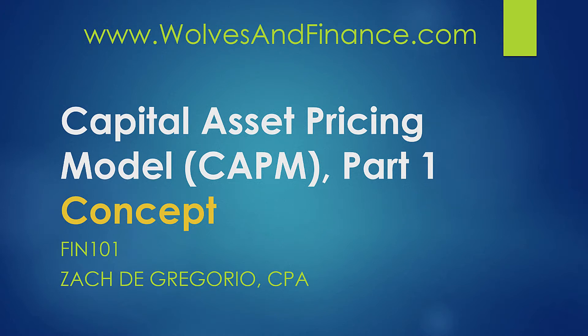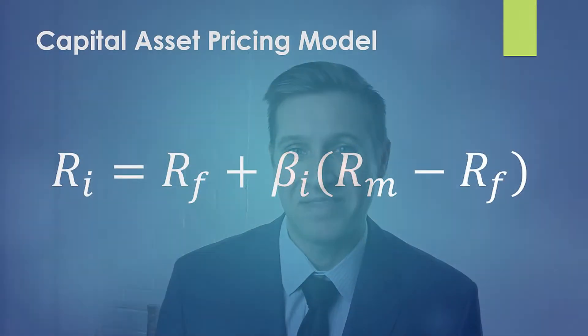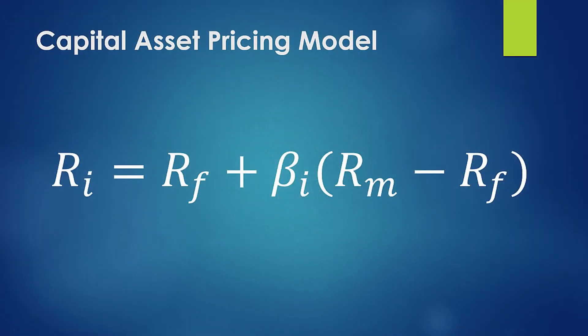This video is on the Capital Asset Pricing Model — people refer to this as the CAPM. I'm going to start by putting up the equation. This is a mathematical equation. It was first published in the 1960s, and the Nobel Prize in Economics was awarded in 1990 to William Sharpe, Harry Markowitz, and Merton Miller jointly for this work.